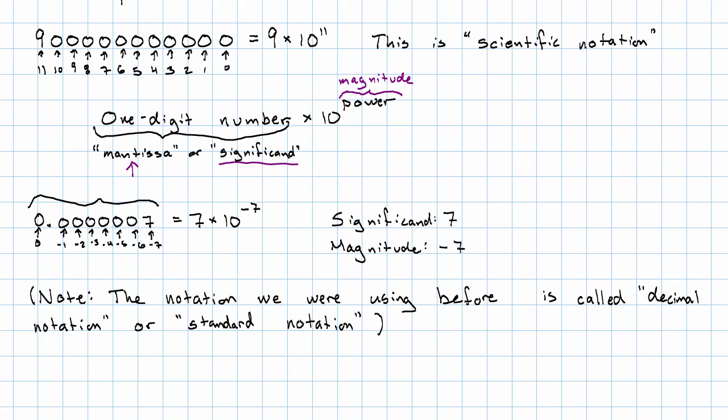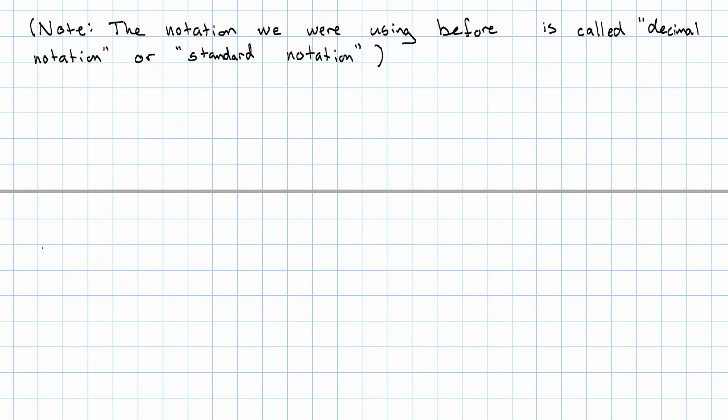One other note to make. Right, you'll notice that both of these were positive. One had a positive magnitude and the other one had a negative magnitude. In general, if we have a positive magnitude, then we're dealing with a large number. So, specifically, a number that's at least 10. If we have a negative magnitude, then we're dealing with a small number, a number that's less than 1.